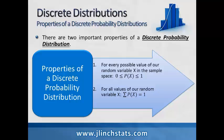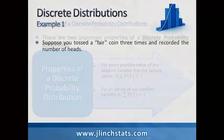Secondly, for all values of a random variable, the sum of all the probabilities that a random variable can take on is equal to 1. So once again, probabilities are always defined to be between 0 and 1, and the sum of all probabilities in our distribution will always equal 1.